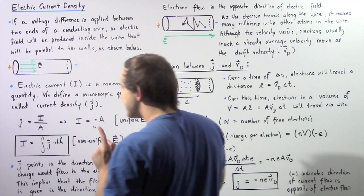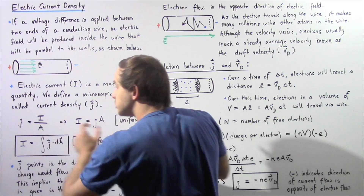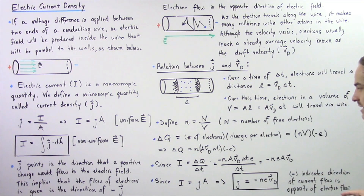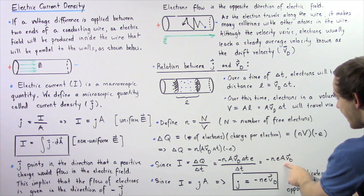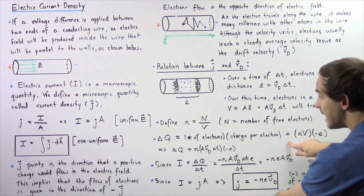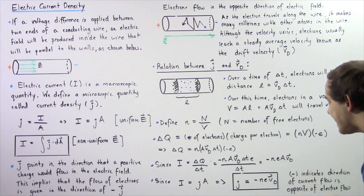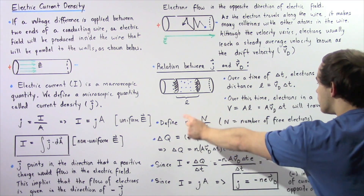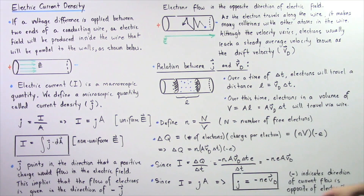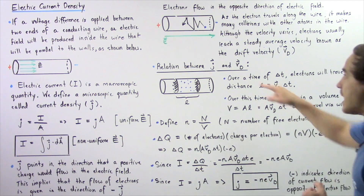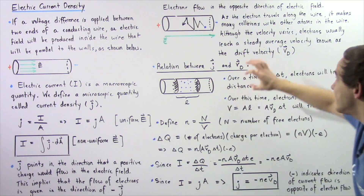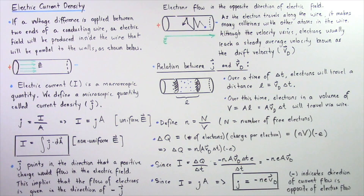Going back to our earlier equation, current density j equals I divided by A. So we substitute our expression for I, the area A cancels from top and bottom, and we find that j = -n · e · v_d. Here n is the number of free electrons per unit volume, e is the charge on one electron, and v_d is the drift velocity. This gives us the relationship between current density and drift velocity. The negative sign simply indicates that the direction of current flow is opposite to the direction of electron flow.